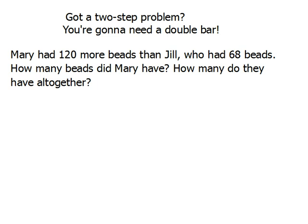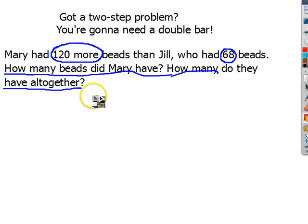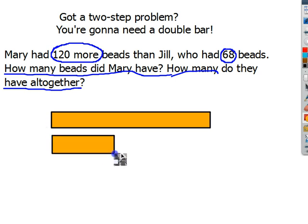So what if you're going to have to do a two-step problem? You're going to need a double bar. Mary has 120 more beads than Jill, who has 68 beads. How many beads did Mary have, and how many do they have all together? Let's start with our numbers: Mary has 120 more beads than Jill, who has 68 beads. It's asking us two questions: how many beads does Mary have, and how many do they have all together? I'm going to need two bars, and I see action words: more, how many, and all together.